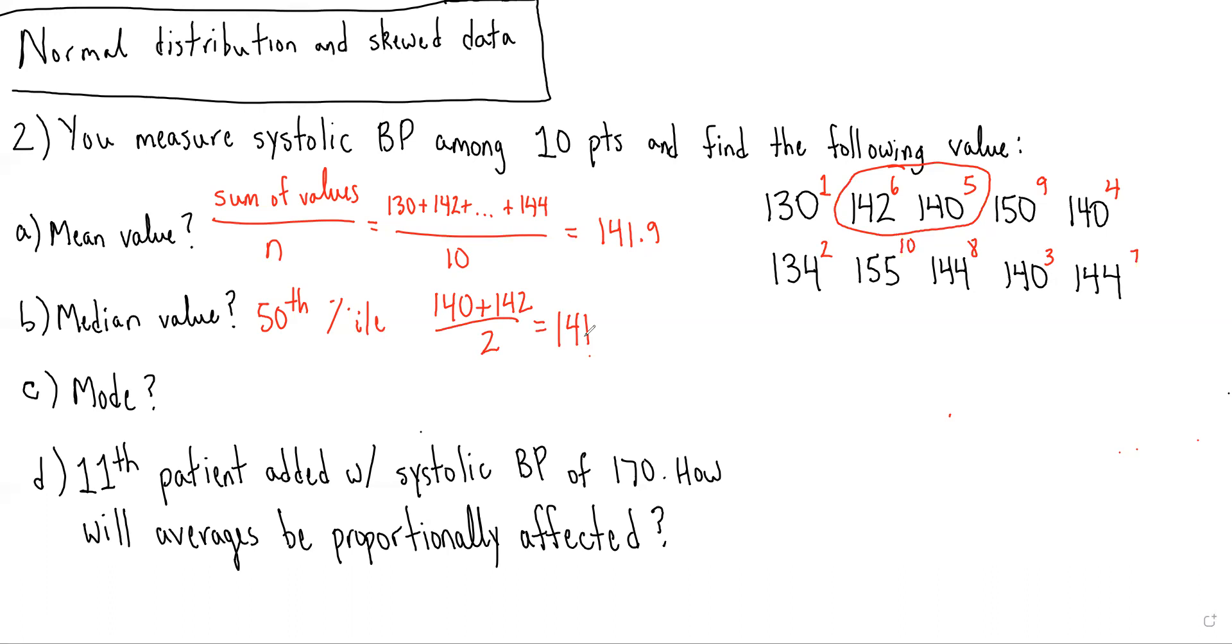And then lastly, we're asked to determine the mode. We remember that the mode is just the most frequent value observed. If you look at our set of observations, we see that 140 is the most frequent value because it appears three times. So the mode in this case would be 140.